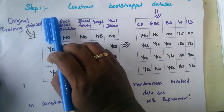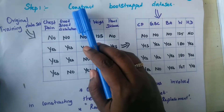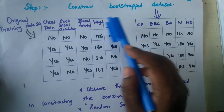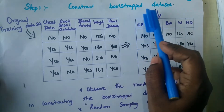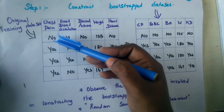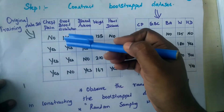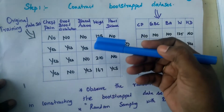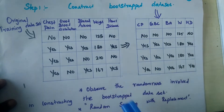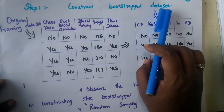So let's look at the algorithm step by step. Step one is to construct a bootstrapped dataset. A bootstrapped dataset is constructed by picking data randomly — we can also have duplicates from the data. That's what we call random sampling with replacement, which is what a bootstrapped dataset means.